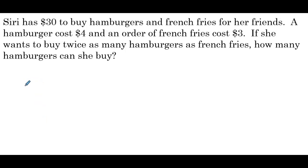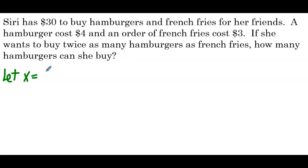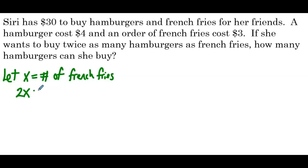Next up, Siri has $30 to buy hamburgers and french fries for her friends. A hamburger costs $4 and an order of french fries costs $3. If she wants to buy twice as many hamburgers as french fries, how many hamburgers can she buy? She wants to buy twice as many hamburgers as french fries, so hamburgers are defined in terms of french fries. It'll be easier to define x as the number of french fry orders, and then the number of hamburgers is 2x.